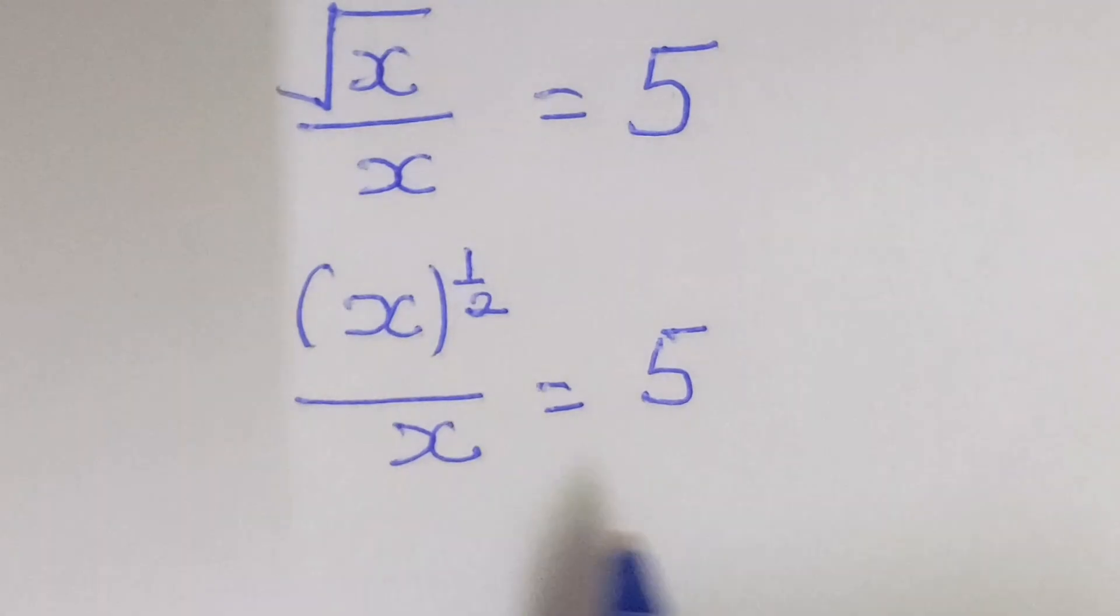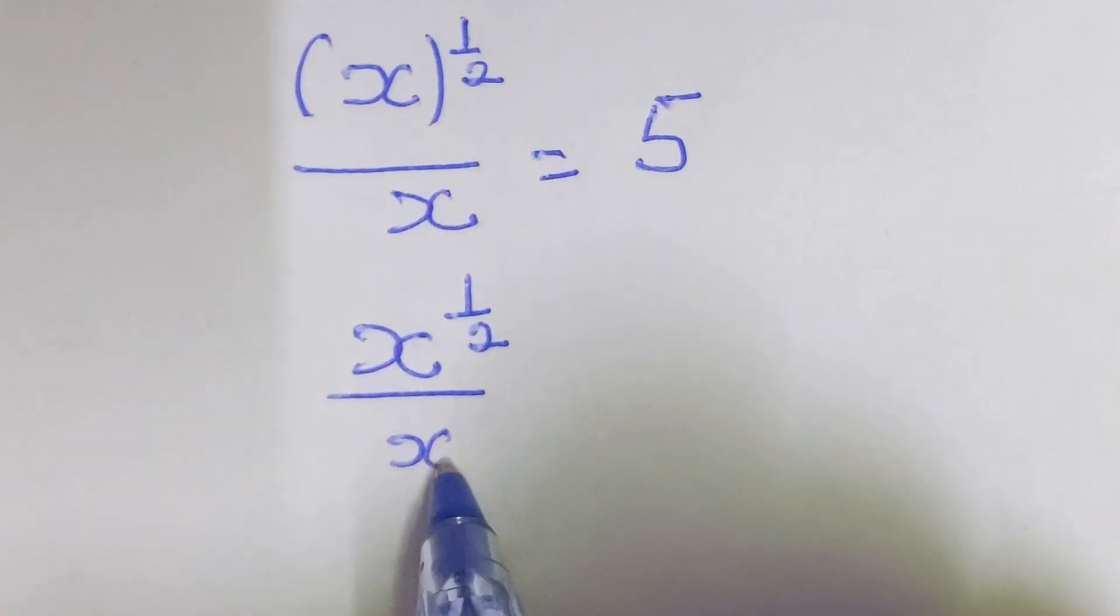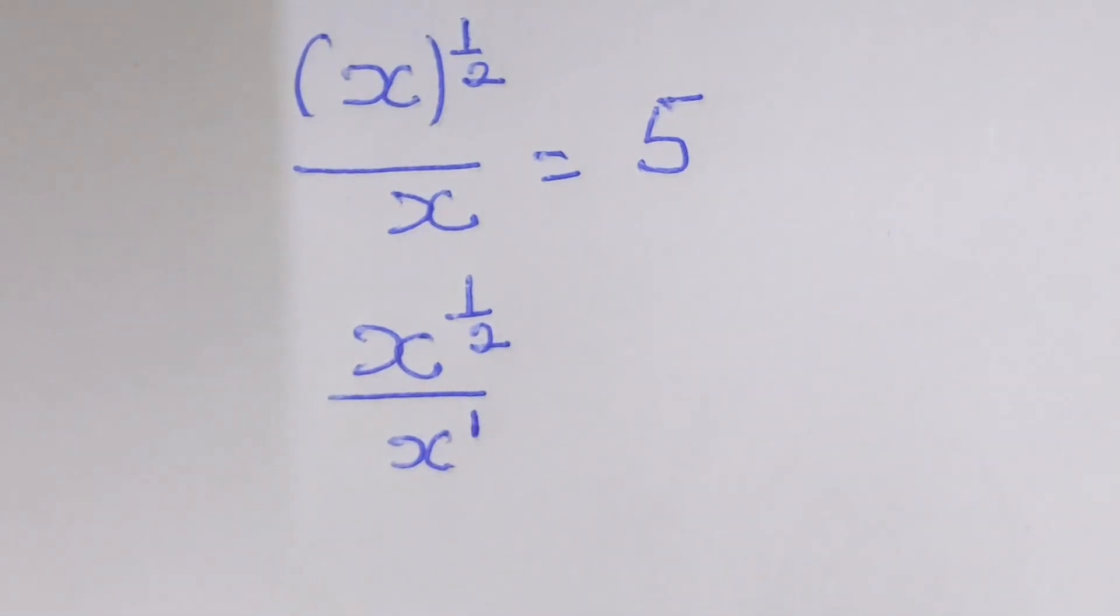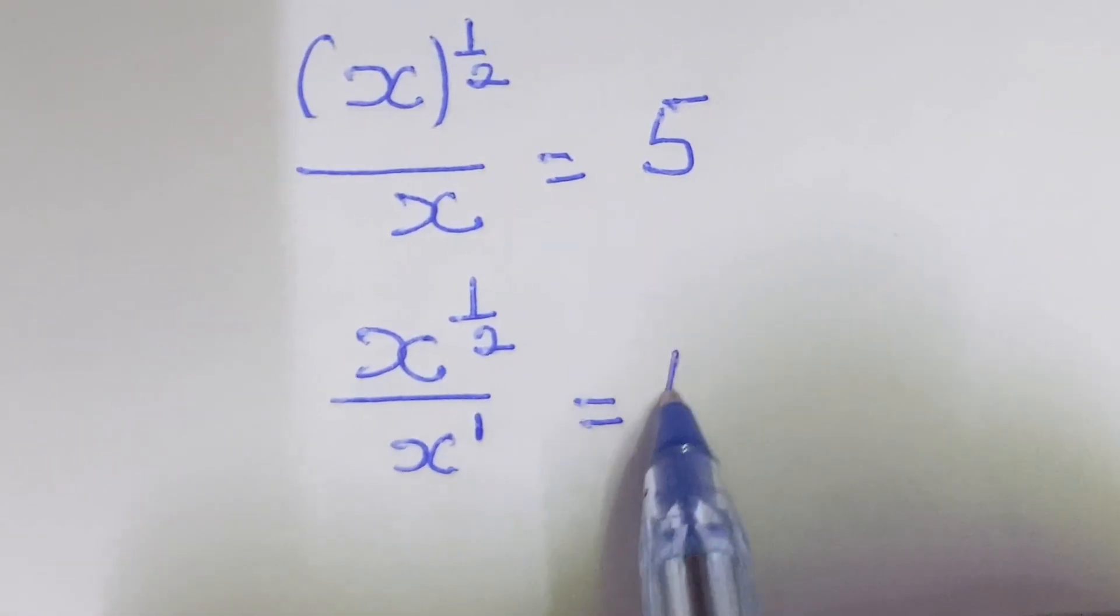And we know that here if you write x power 1 over 2 over x, we know that x has power of 1, that is what we call invisible power, then equal to 5.